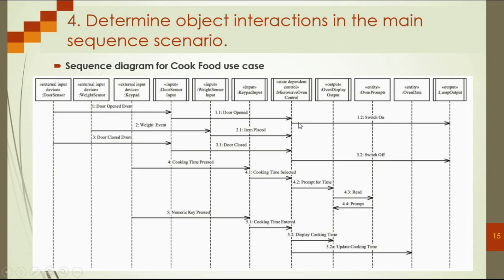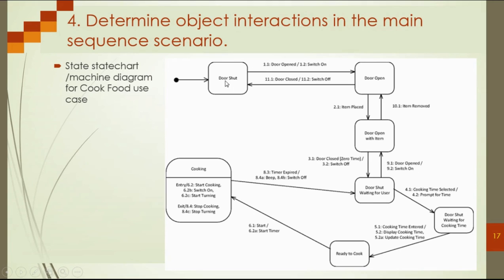The microwave oven control object should then send a message to the lamp so the lamp should turn on. However, the control object does not send directly to the lamp output — there is something in between, which is the interaction between the state-dependent control object and the state chart. Once the door open event is received as the first message, the message is sent through the state-dependent control action.